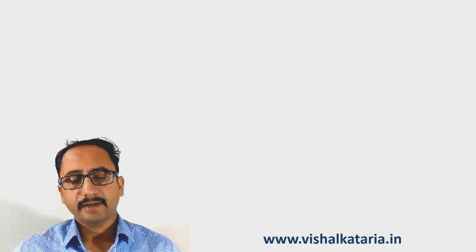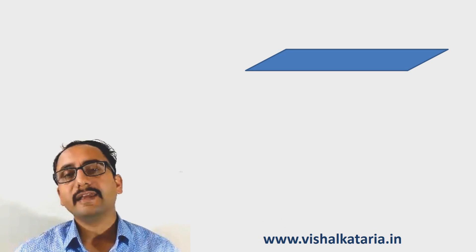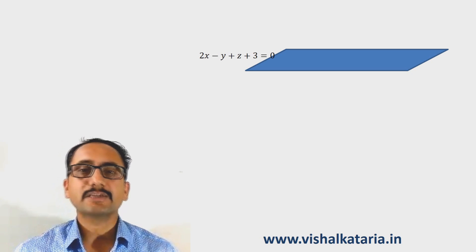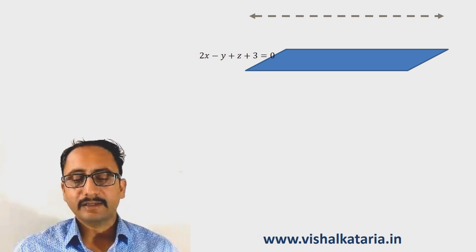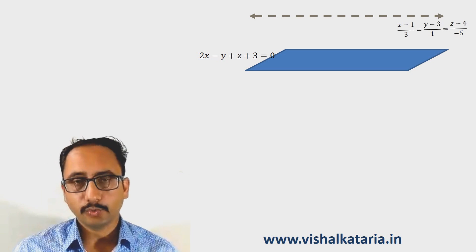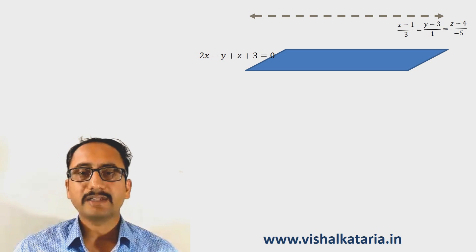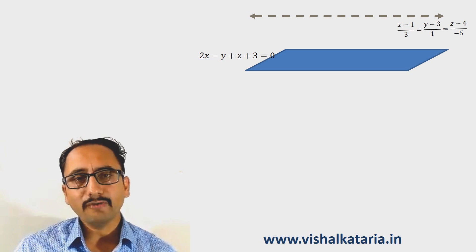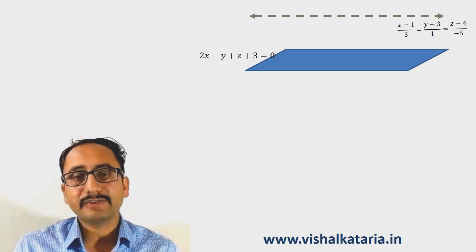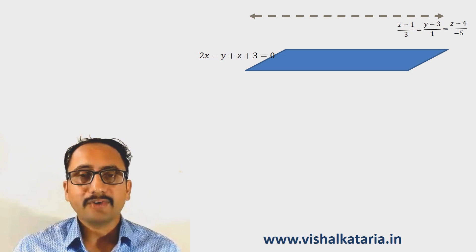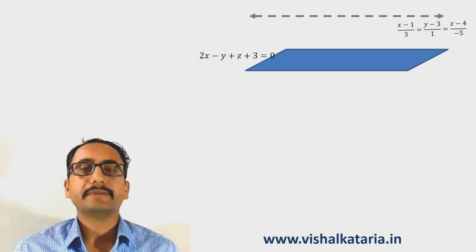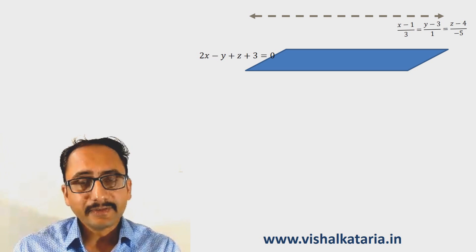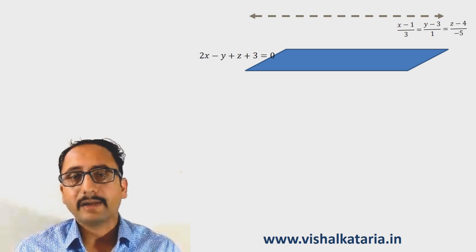Let us consider a plane given to us with equation 2x minus y plus z plus 3 equals 0, and a given line whose equation is (x minus 1)/3 = (y minus 3)/1 = (z minus 4)/(minus 5). First of all we will check whether the given line is parallel to the given plane or not, because in an exam the equations will be given to us, not the figures.